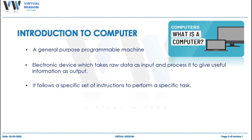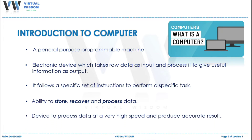A computer has the ability to store, retrieve, and process data, so it stores the generated output for future use. A computer processes data at a very high speed and produces accurate results. A computer can be a calculator, wristwatch, laptop, etc.